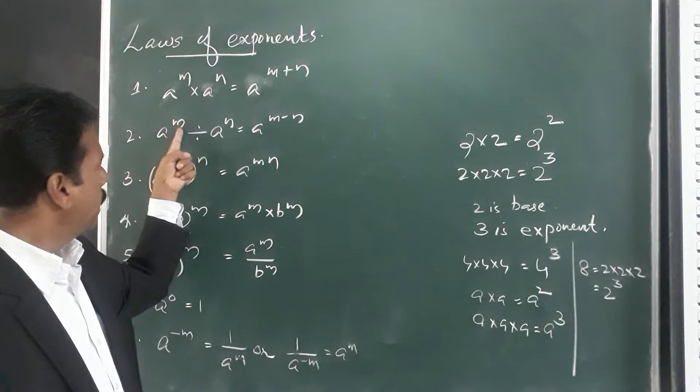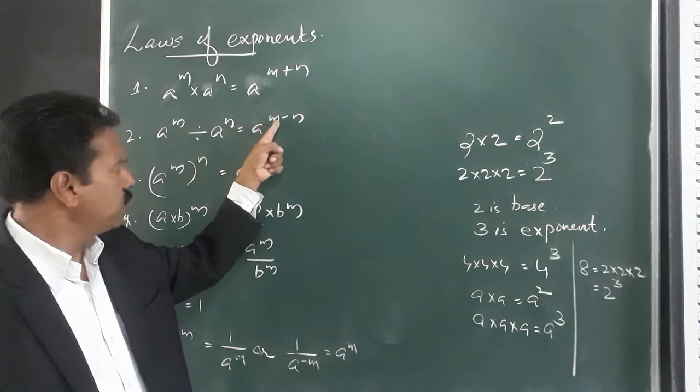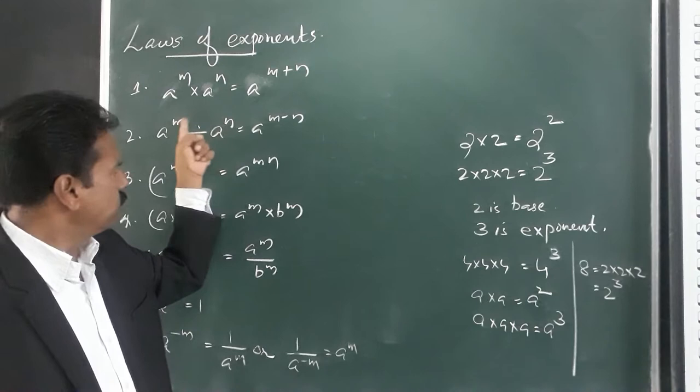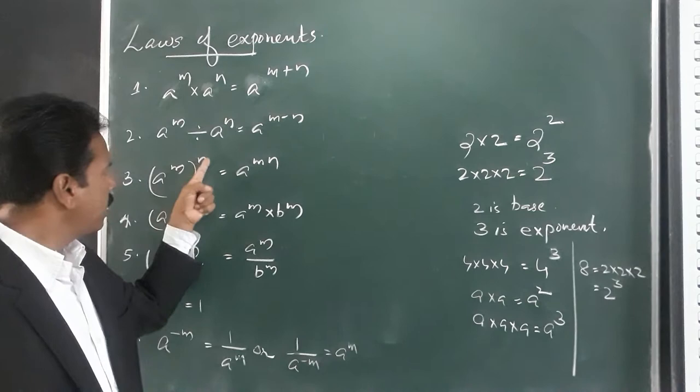The second rule: a raised to the power of m divided by a raised to the power of n is equal to a raised to the power of m minus n. We subtract the exponents.